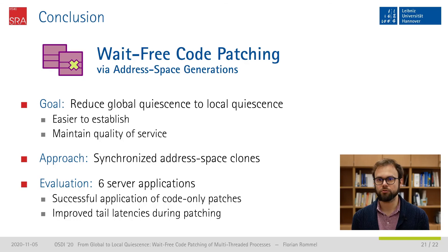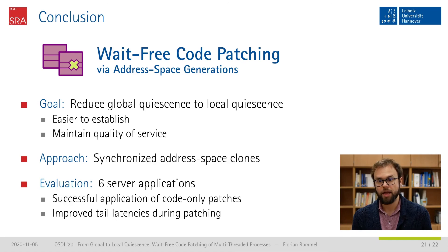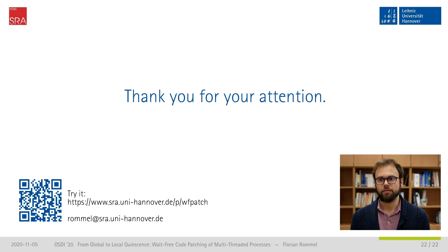To wrap up, in this work we presented wait-free code patching via address-space generations. The goal is to reduce global quiescence to local quiescence, which is often easier to establish and enables us to maintain quality of service while applying a patch. The approach allows a process to have multiple address-space clones kept in sync with each other. We evaluated our approach with six server applications, were able to apply code patches during runtime, and improved tail latencies during the patching process. Thank you very much for your attention. You'll find the paper, source code, and artifacts on our website.